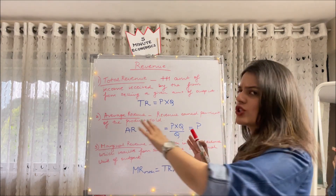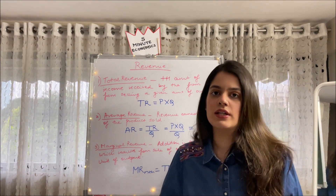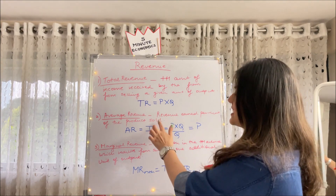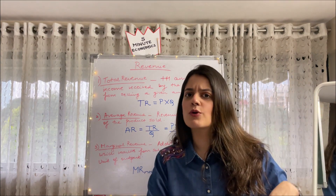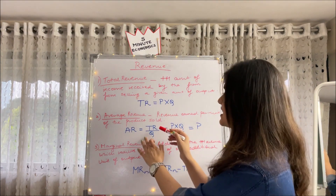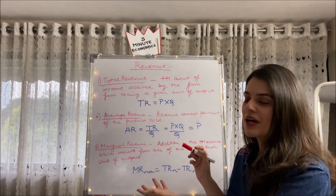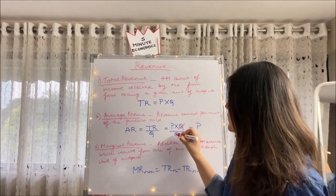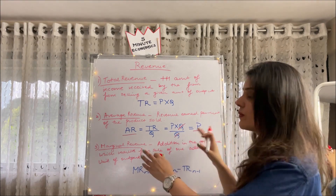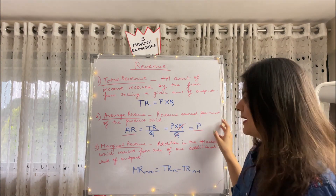Next, average revenue — whenever we say 'average' it means per unit, so it is revenue earned per unit of the product sold. The formula is AR = TR / Q. Since TR = P × Q, substituting and cancelling Q gives us AR = P. So average revenue equals price. You will be even more clear with this when we study revenue under perfect competition.